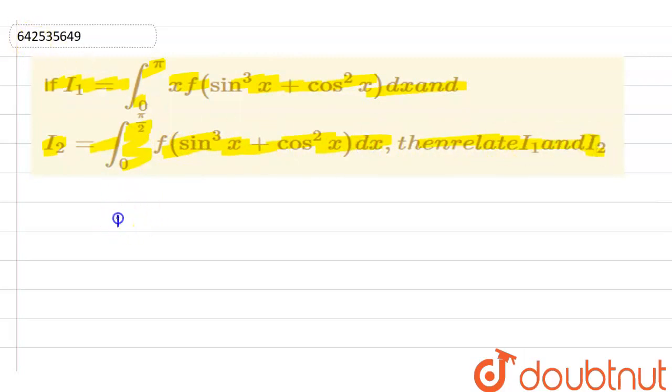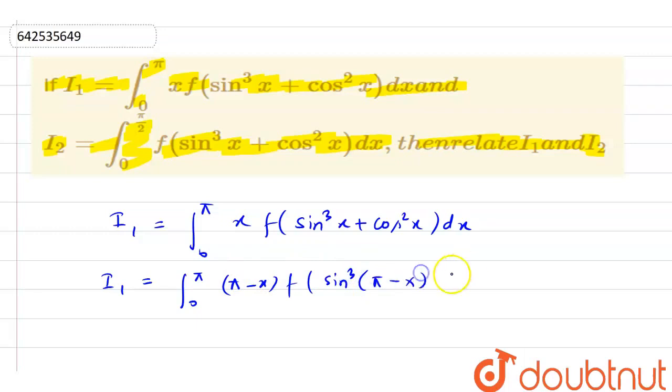So my i1 here is 0 to pi x f of sin cube x plus cos square x dx. Now, by using a property, the king property, on adding upper limit and lower limit and subtracted with x, we can write it as pi minus x f of sin cube pi minus x plus cos square pi minus x dx.